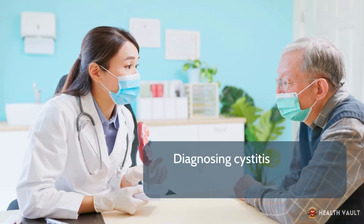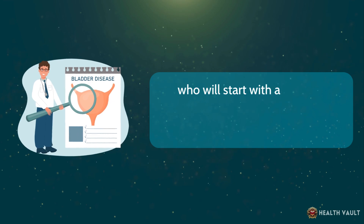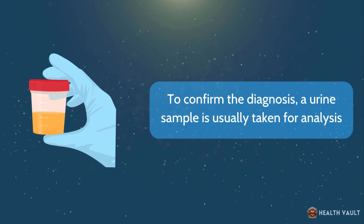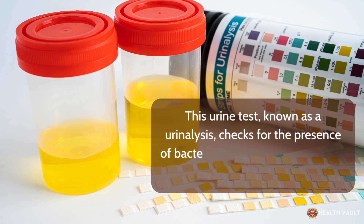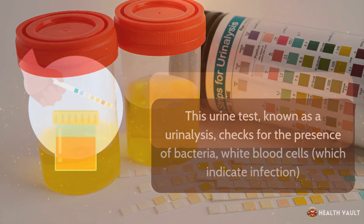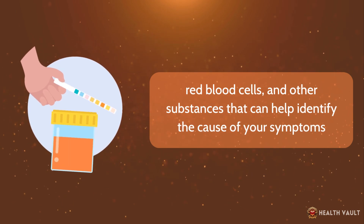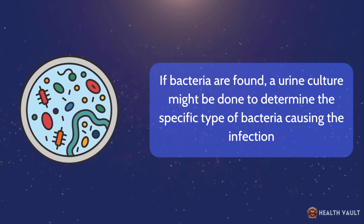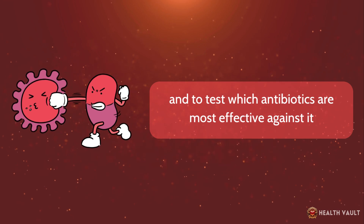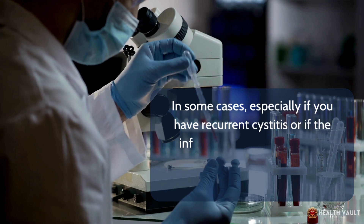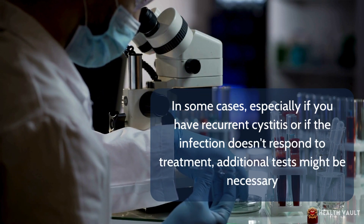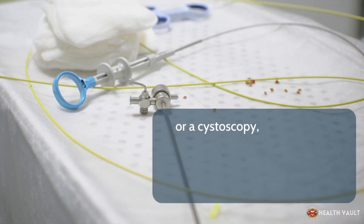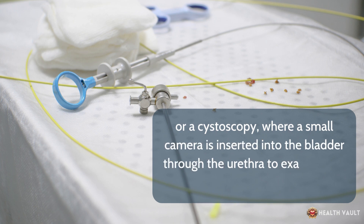Diagnosing cystitis typically involves a visit to your doctor, who will start with a detailed medical history and a discussion of your symptoms. To confirm the diagnosis, a urine sample is usually taken for analysis. This urine test, known as a urinalysis, checks for the presence of bacteria, white blood cells — which indicate infection — red blood cells, and other substances. If bacteria are found, a urine culture might be done to determine the specific type of bacteria and test which antibiotics are most effective. In some cases, additional tests like an ultrasound, CT scan, or a cystoscopy — where a small camera is inserted into the bladder through the urethra — may be necessary.